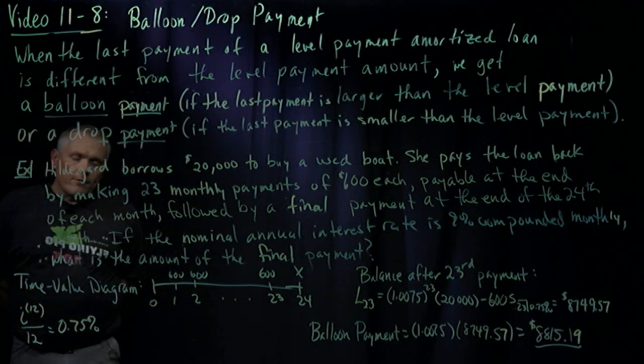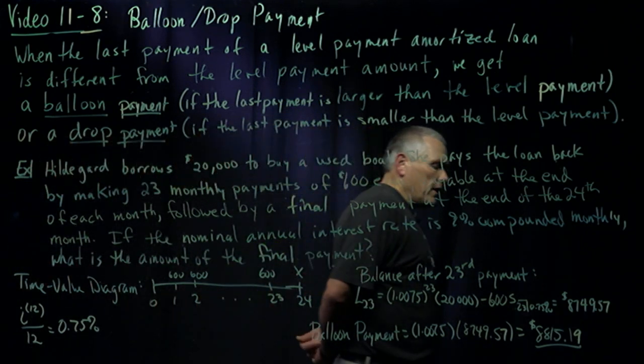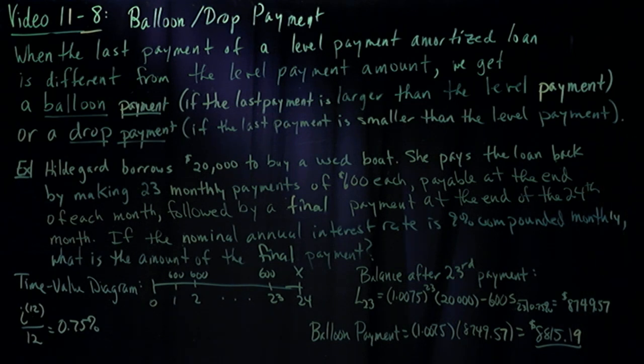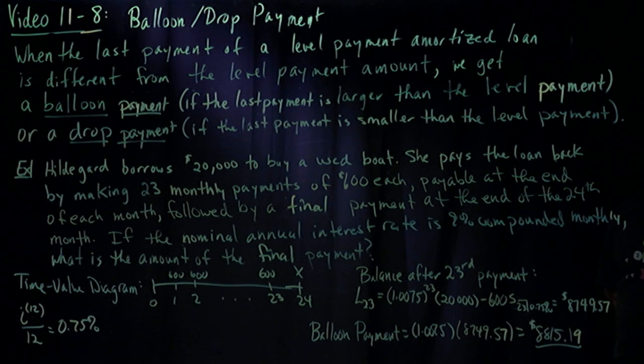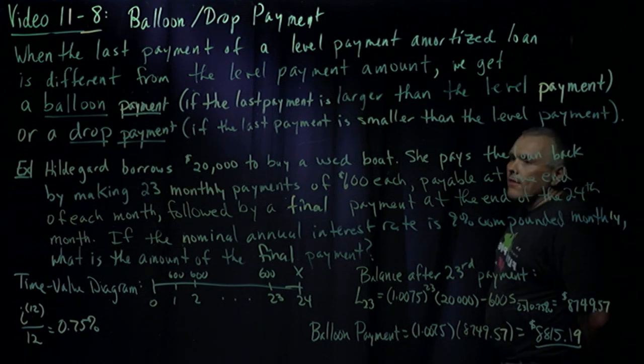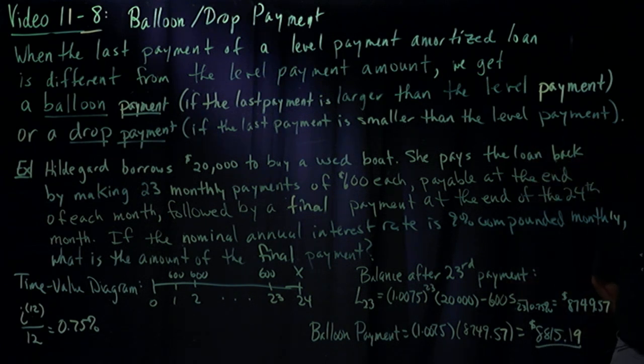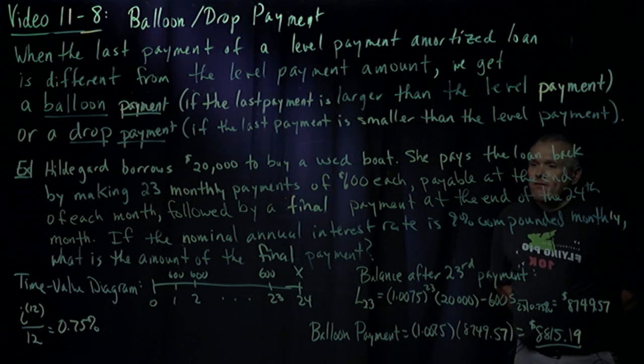Let's just illustrate how we handle this by example. We've seen Hildegard in a previous video. Hildegard bought a used boat for $20,000. She's going to pay the loan back using 23 monthly payments of $600 each, payable at the end of each month, and then it's going to have a final payment at the end of the 24th month. If we've got a 9% nominal rate compounded monthly, what's the amount of the final payment?